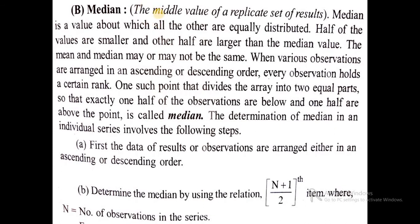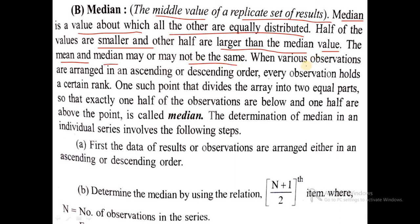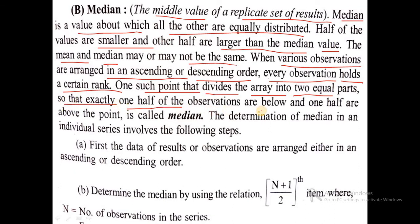Then what is the median? The median is the middle value of a replicate set of results. The median is a value about which all other values are equally distributed — half the values are smaller and the other half are larger than the median. The mean and median may or may not be the same. When observations are arranged in ascending or descending order, the median is the point that divides the array into two equal halves.